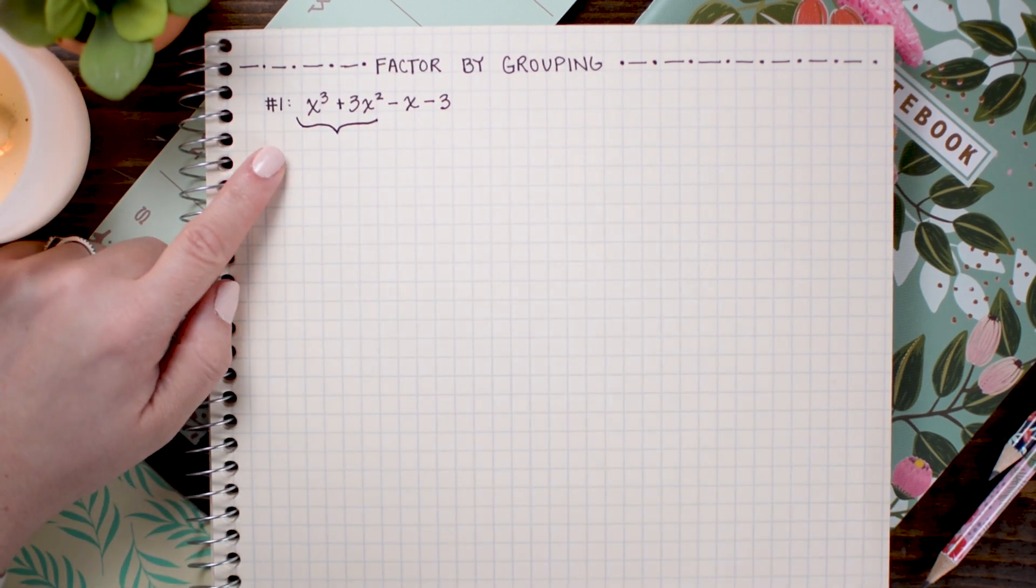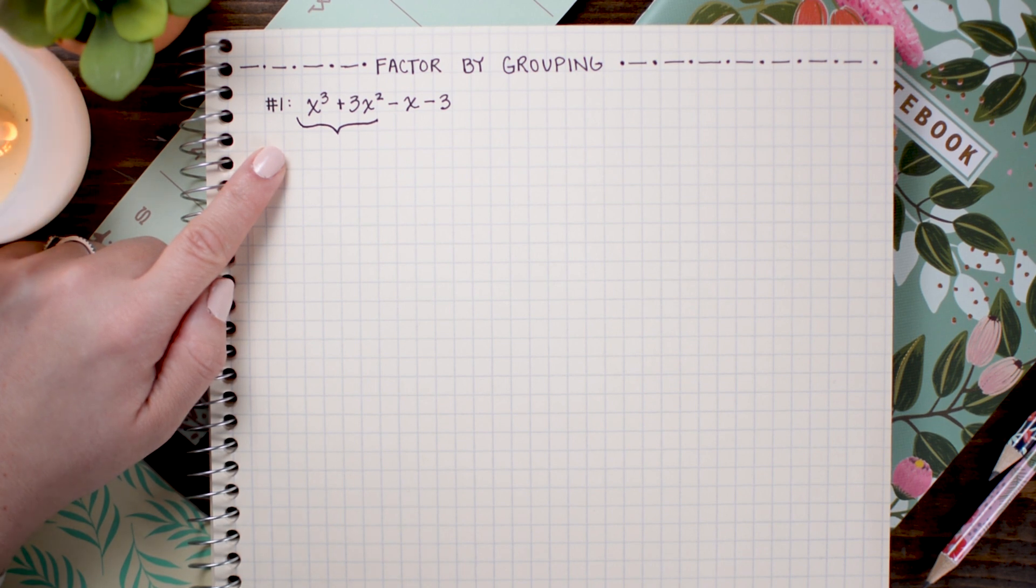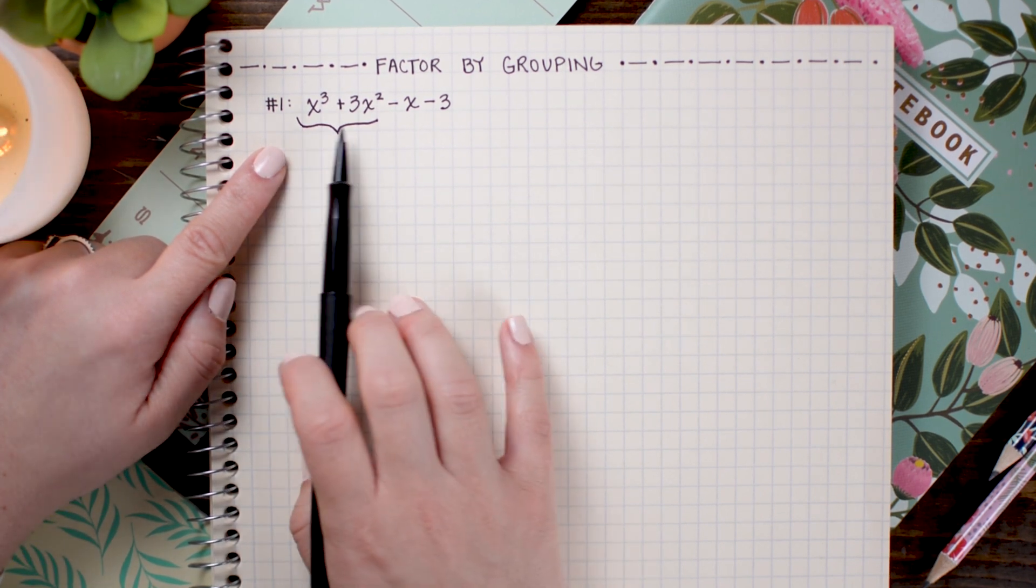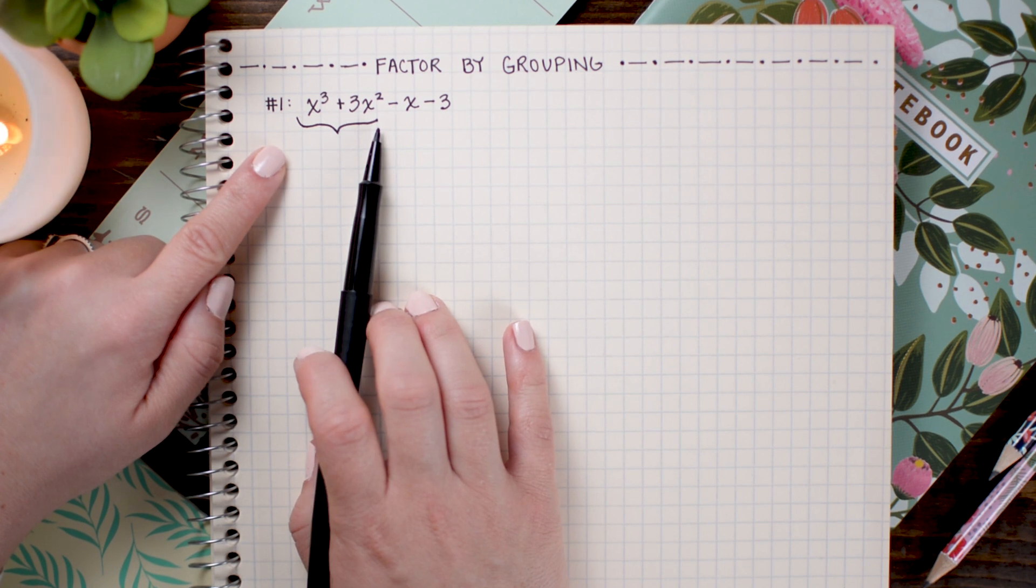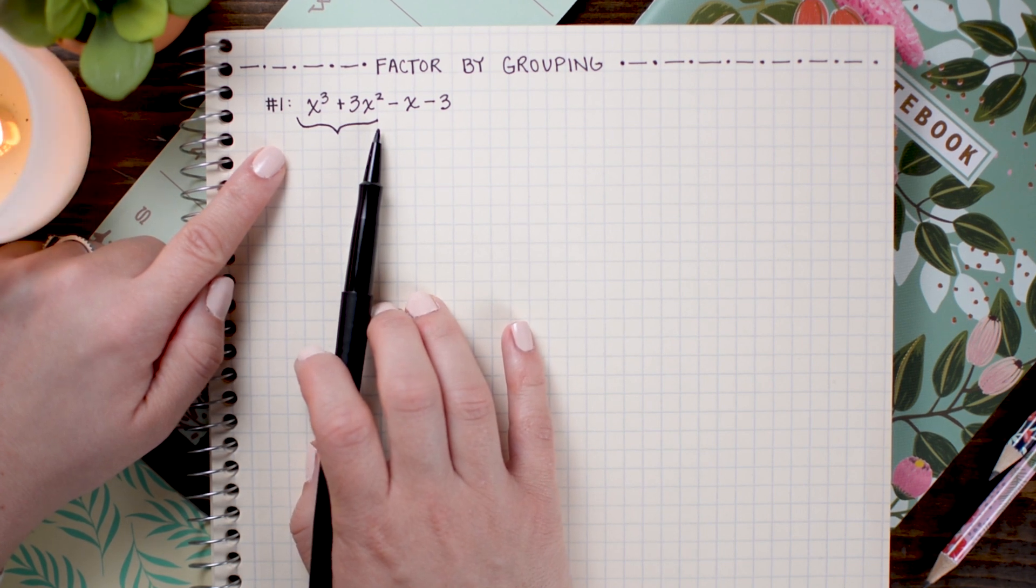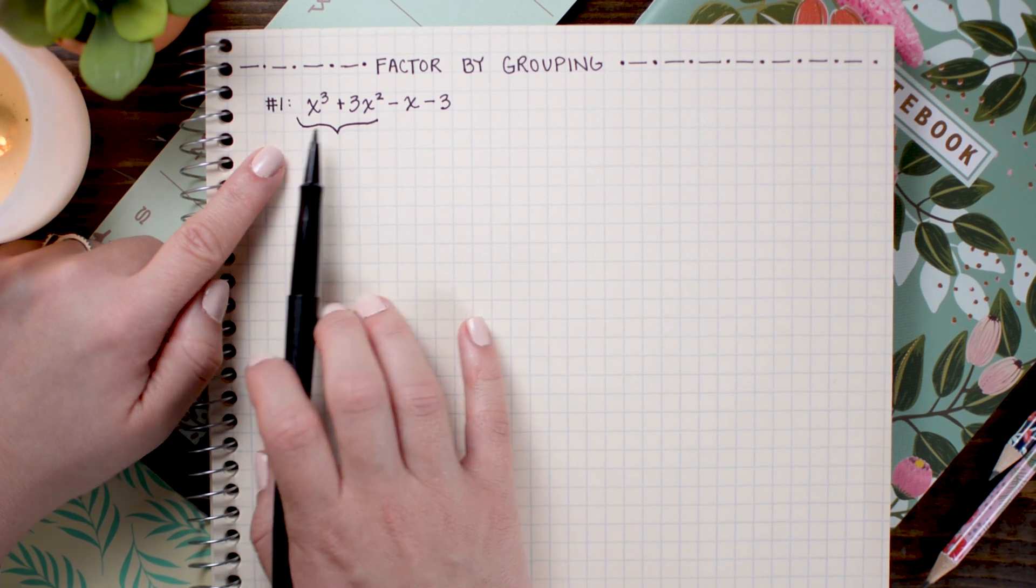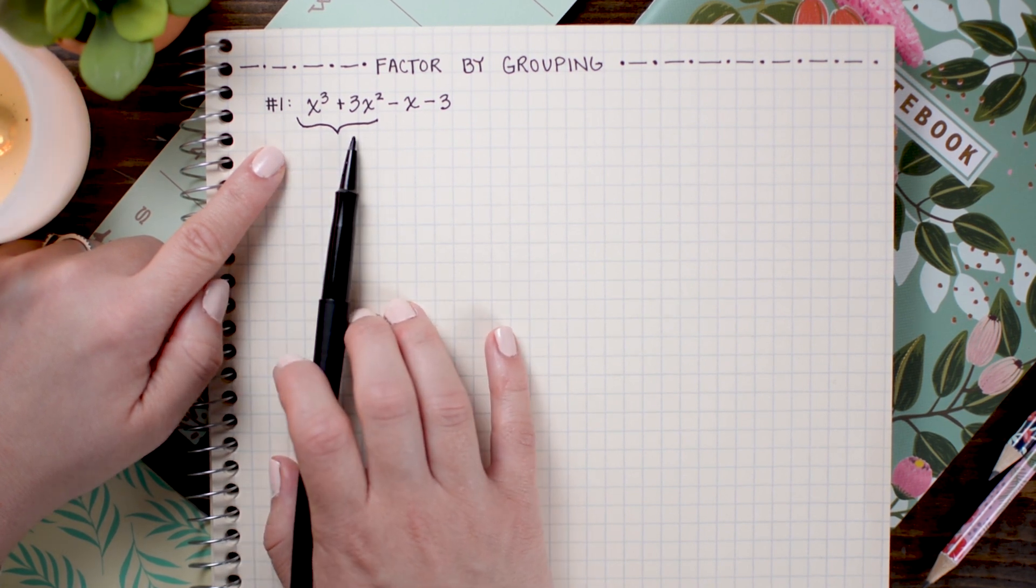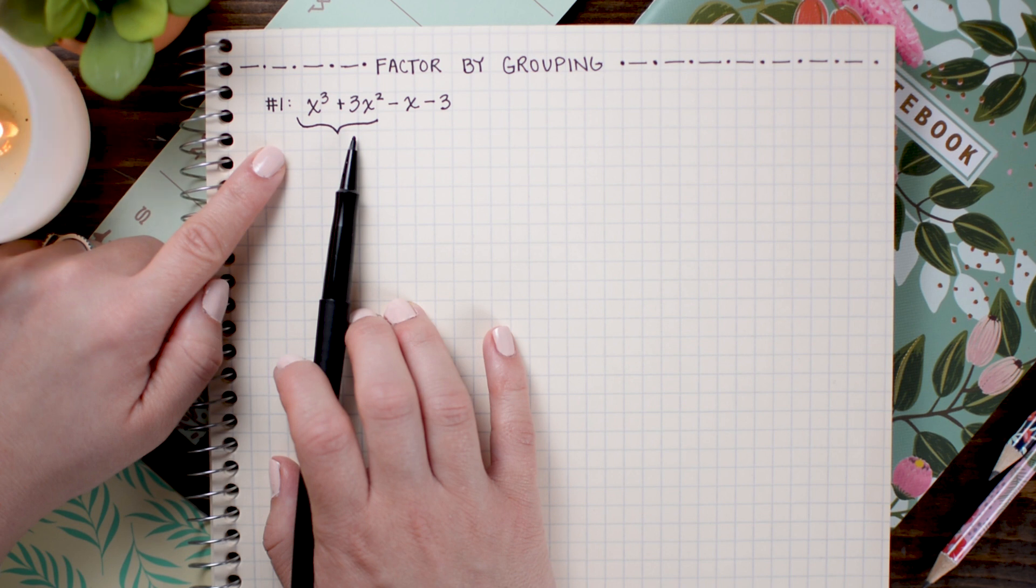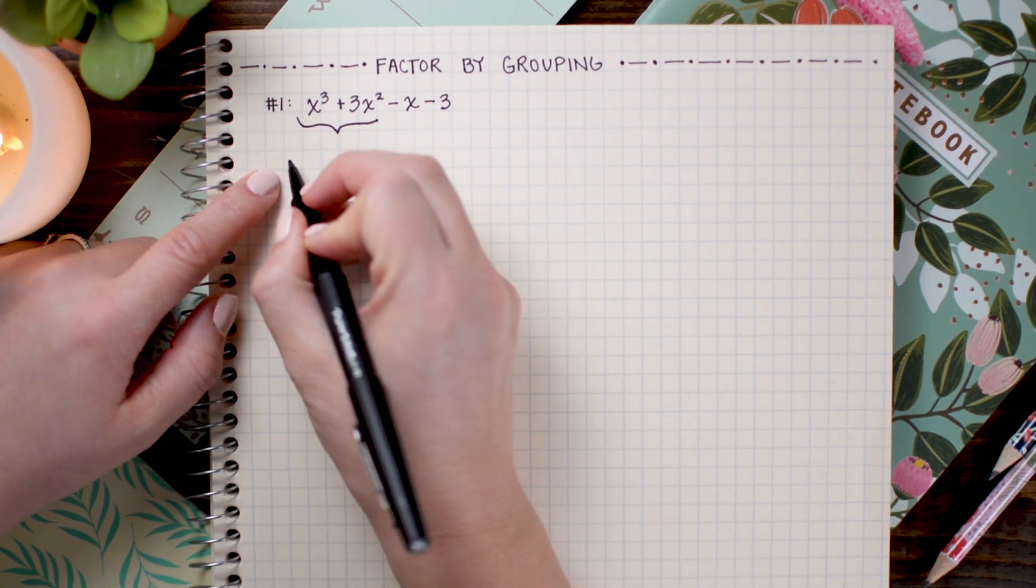So, here I have x cubed plus 3x squared. Now, if you recall, the GCF is the greatest common factor. That means, it's the numbers and variables that are common to both of these terms. If you need a refresher on that, I have a great tutorial on factoring out the GCF that I'll link to. So, for x cubed and 3x squared, it looks like the common factor is x squared. So, I'm going to factor out x squared.